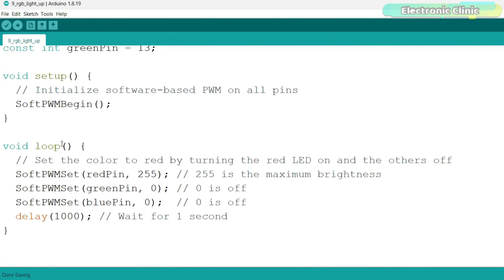In the setup function, we activate the soft PWM library. Now the actual code is in the loop function that runs repeatedly. This instruction lights up the red LEDs with full brightness while all the other LEDs are off. Let's upload this program.